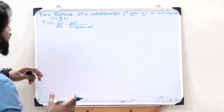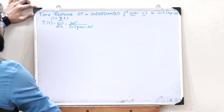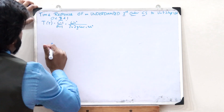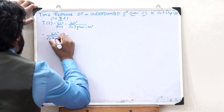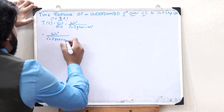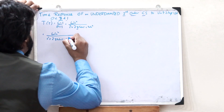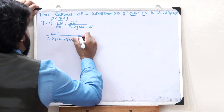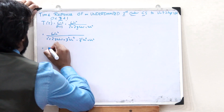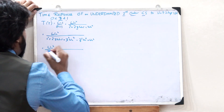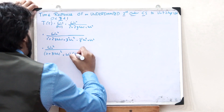To find the time response of an under-damped control system, we give a step input. But before doing that, we rearrange the transfer function. We rewrite the denominator by completing the square: ωn² divided by (s + ζωn)² + ωn²(1 − ζ²). We add and subtract ζ²ωn² to form the perfect square term (s + ζωn)².